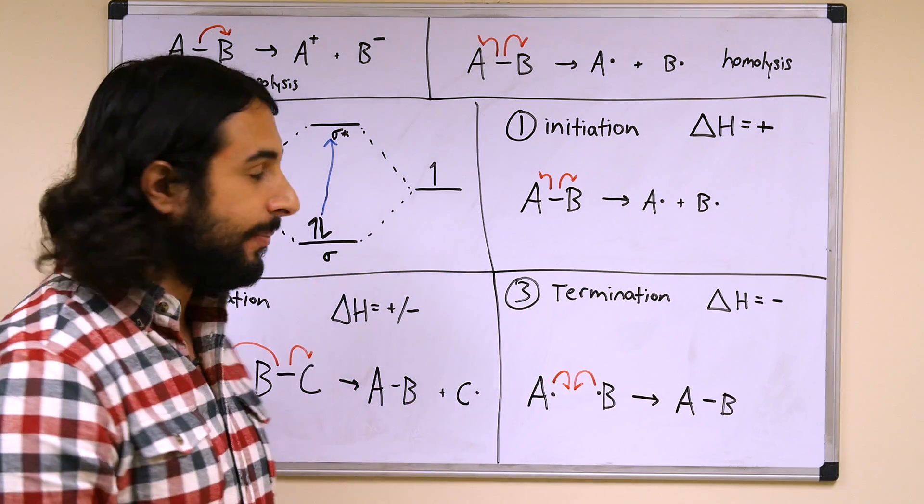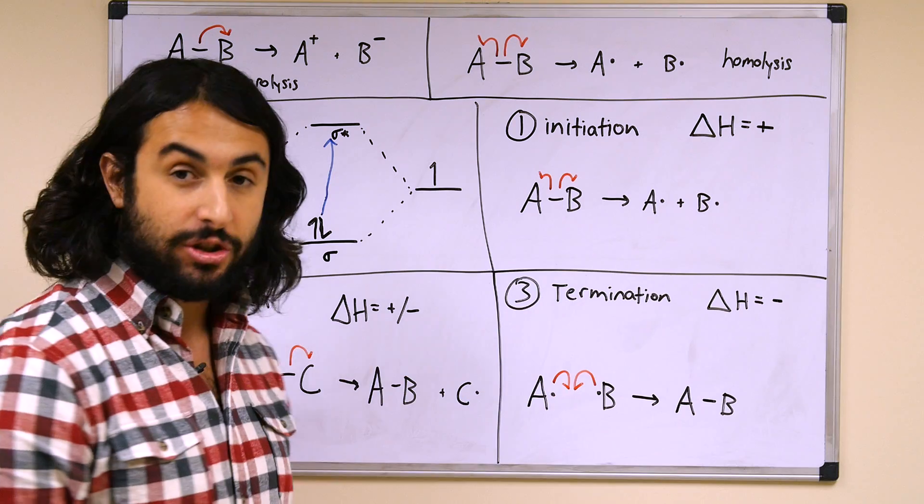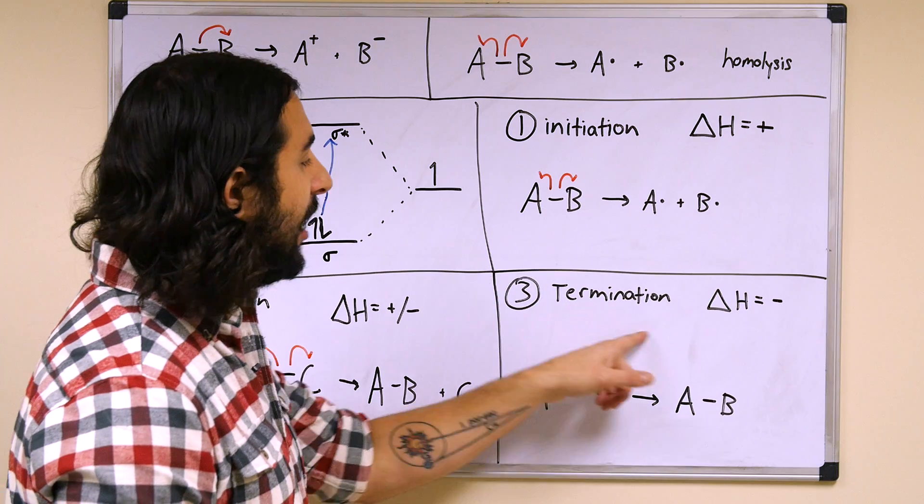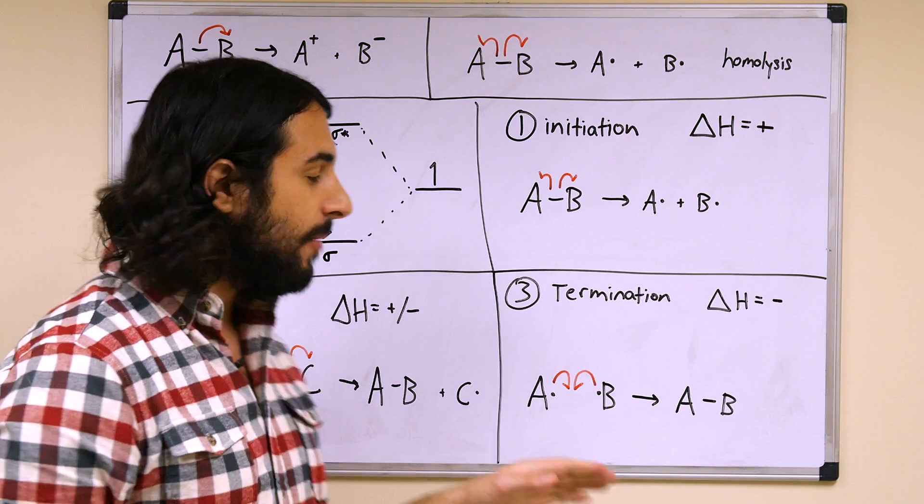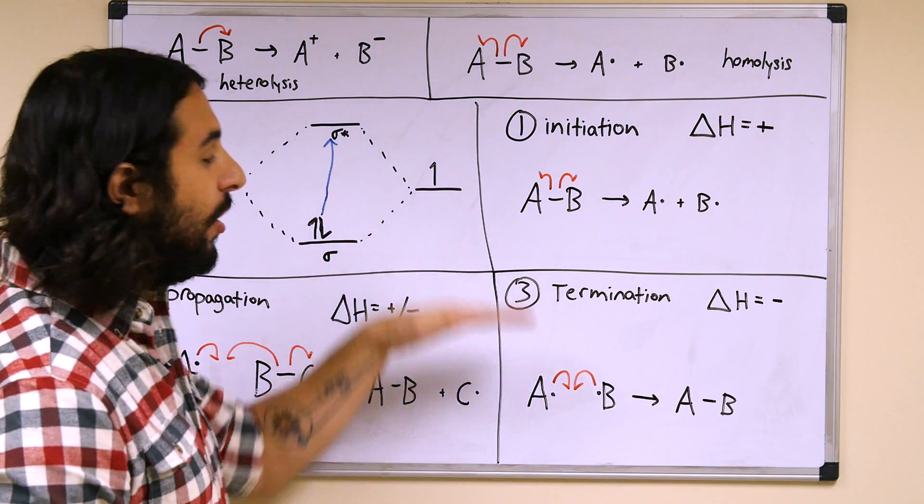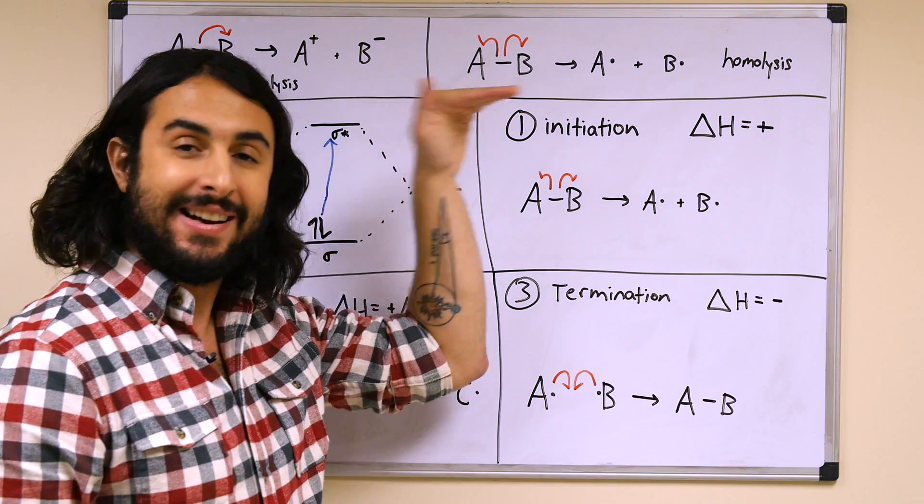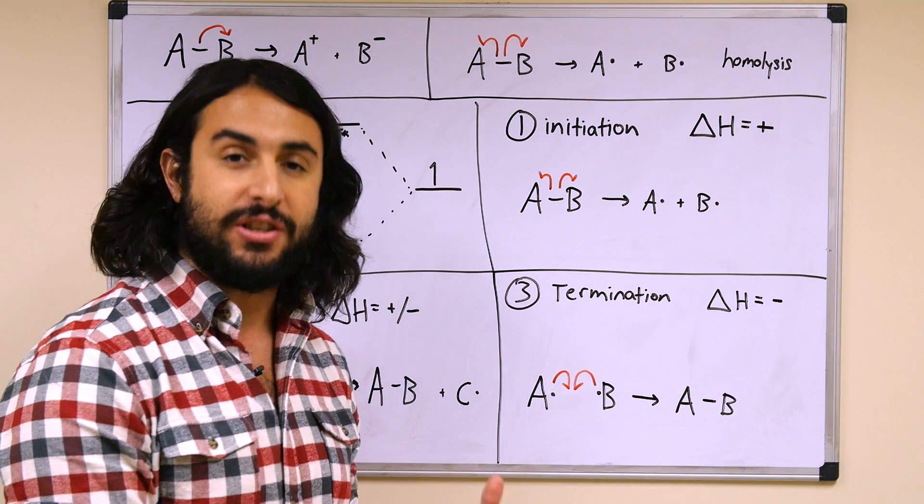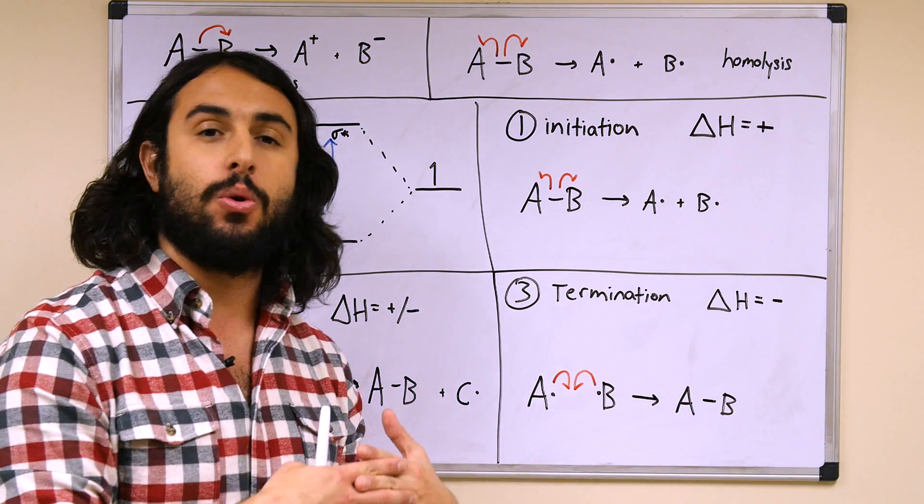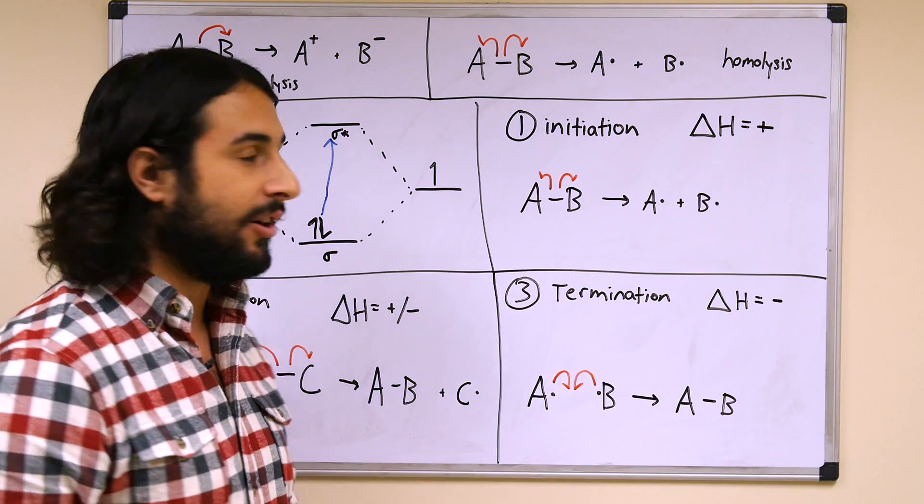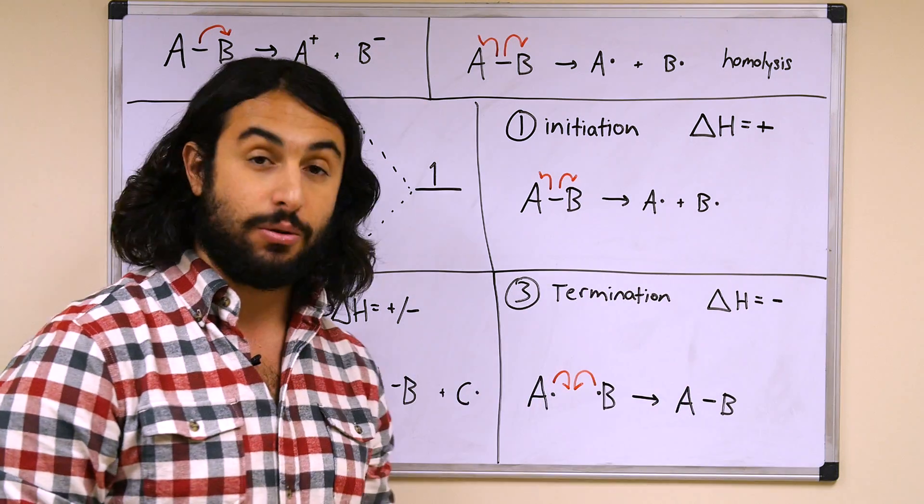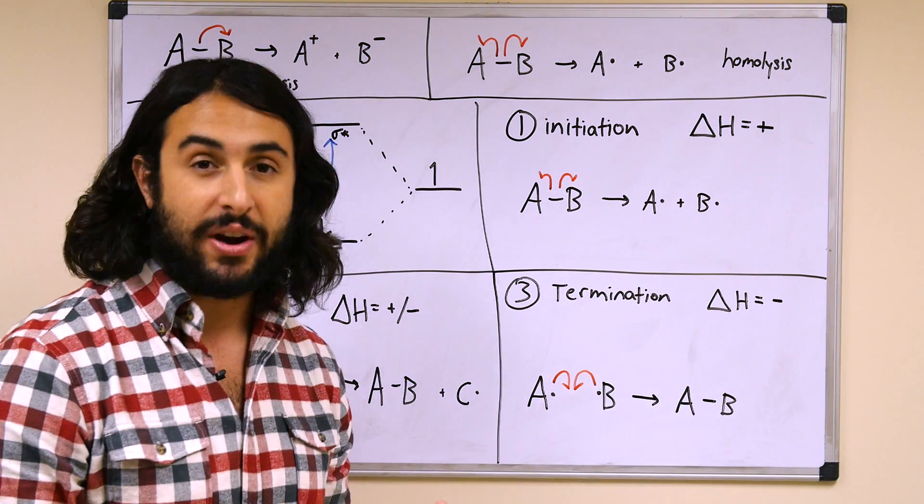Now just as initiation will always be endothermic, termination will always be exothermic, because we have these very high energy unstable radical species that would be very high on an energy diagram, then going to form a covalent bond between them, which is a storage of energy. Any bond is a storage of energy, so that will bring this whole system to a much lower energy. So initiation always endothermic, termination always exothermic, propagation depends on which bonds are breaking and forming.